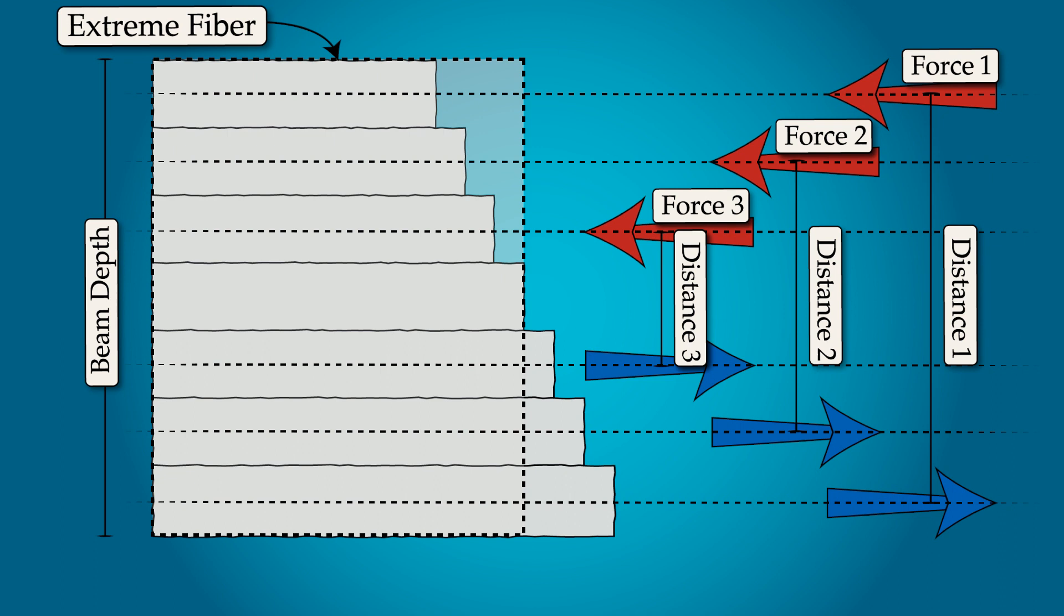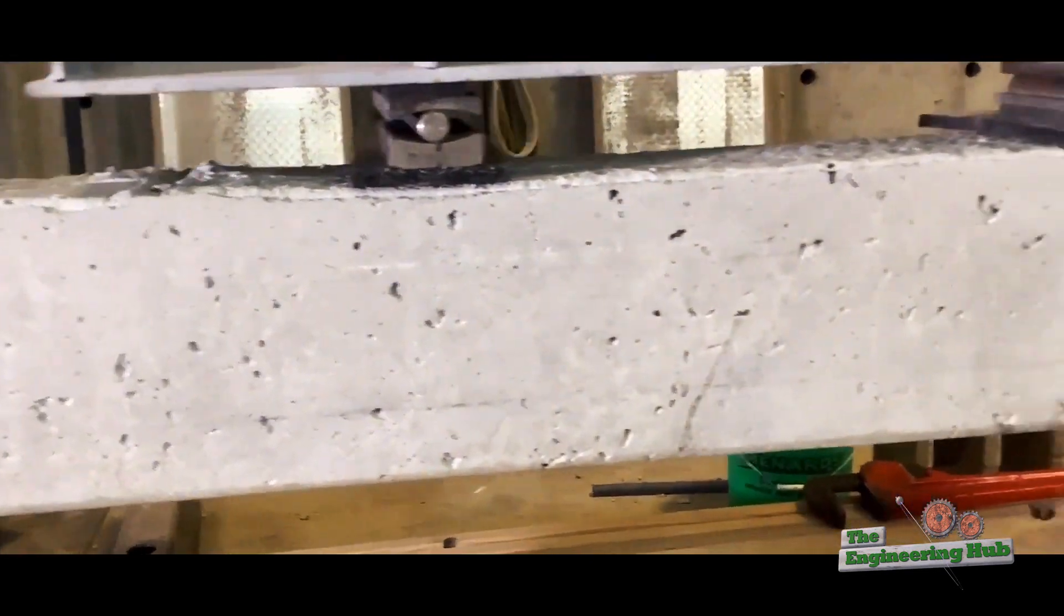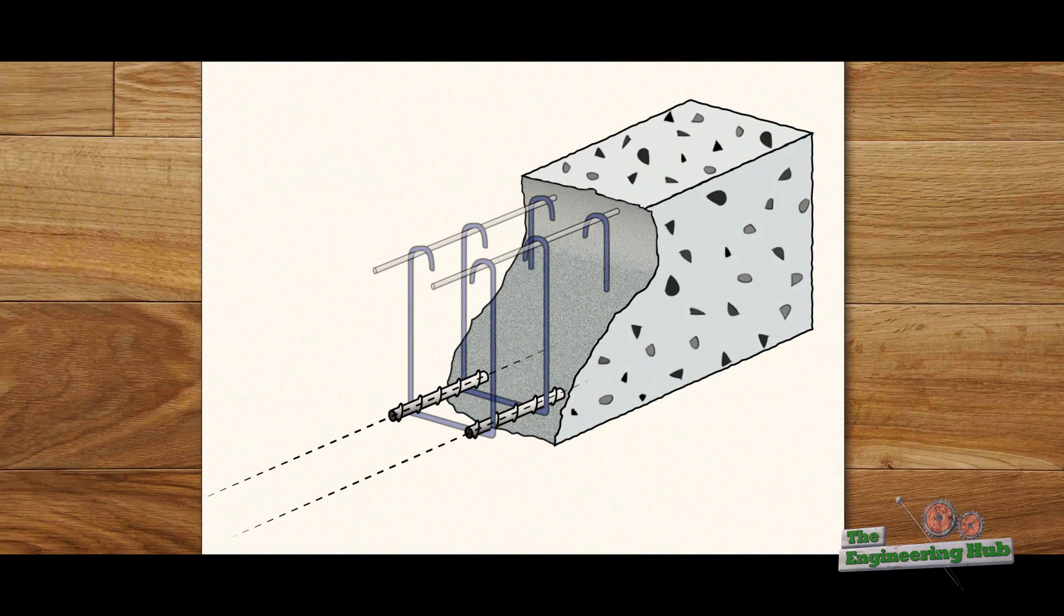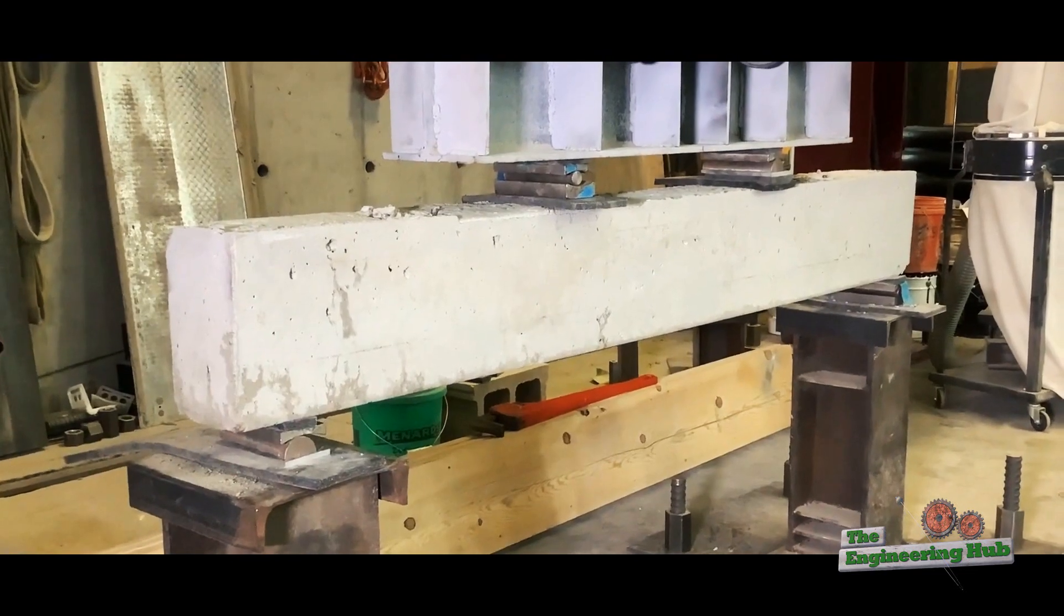In reinforced concrete beams, the mechanics are a bit more complicated. Instead of having multiple strips on the bottom, all of the force is resisted by the steel bars. Keep in mind that this is only one type of failure.